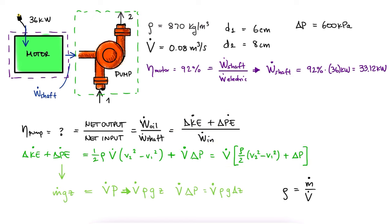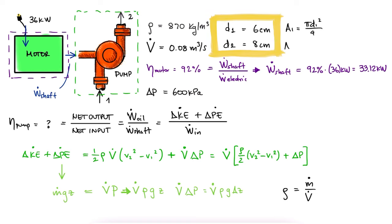We see that we need the velocity of the oil at the inlet and at the exit. Since we have the diameters of the pipes, we can find the areas, and with them, the velocity would be the volumetric flow rate over each area.